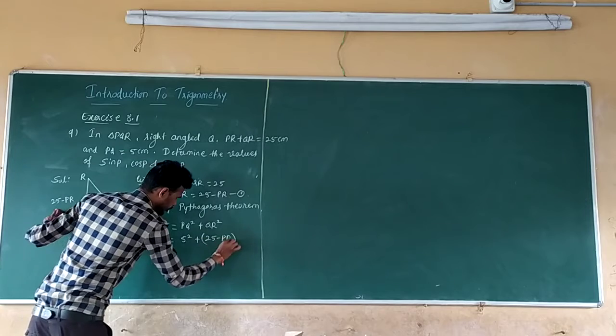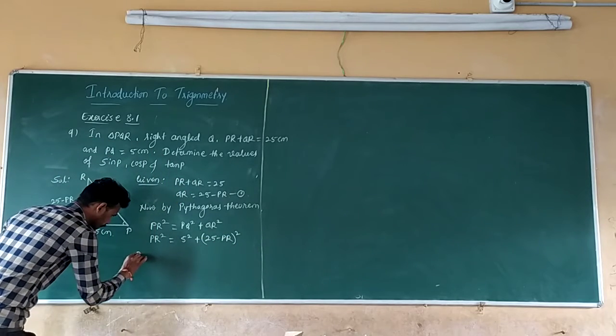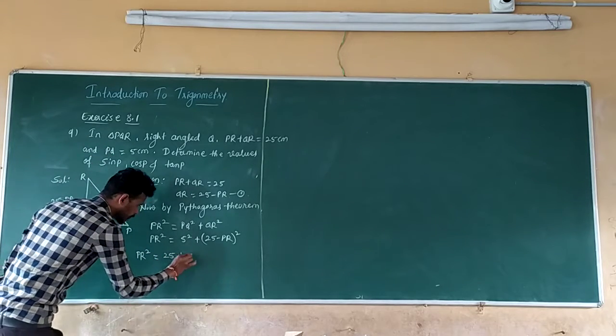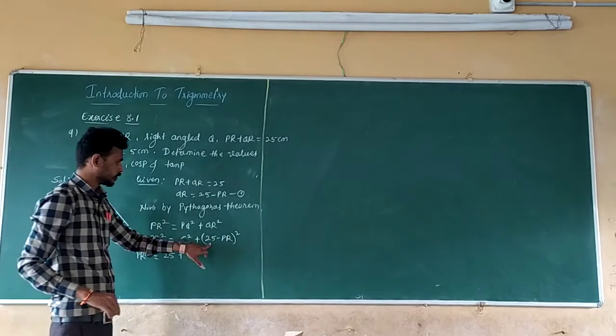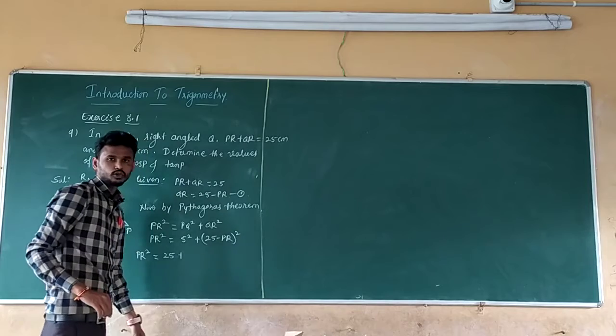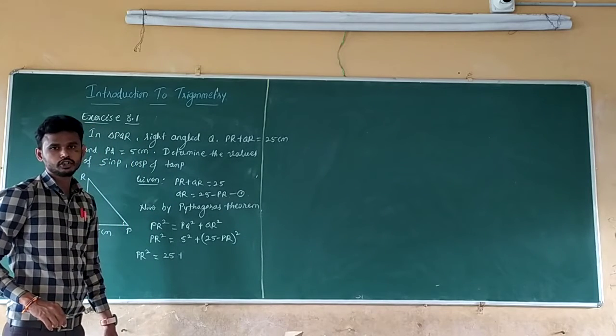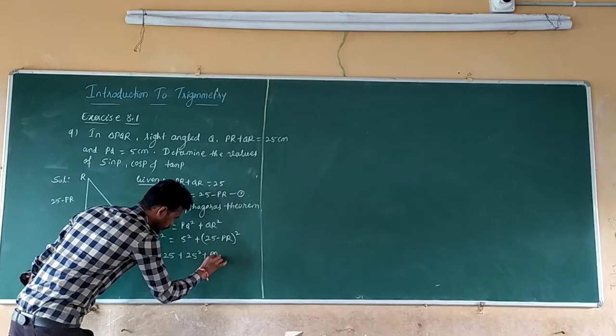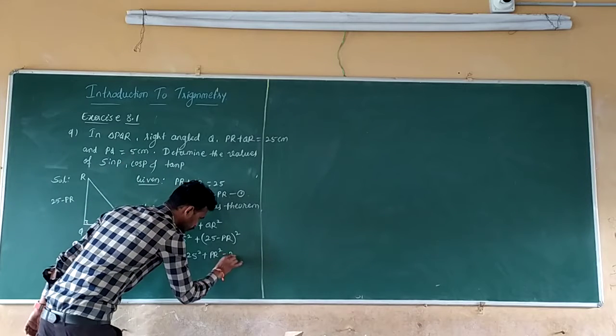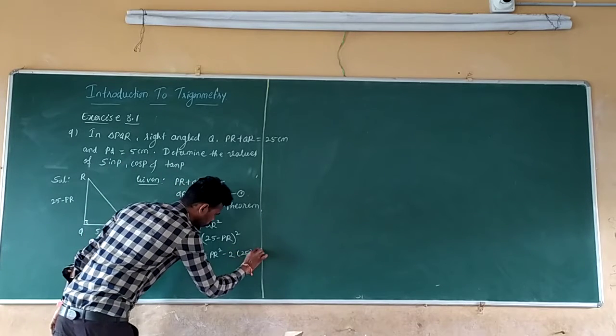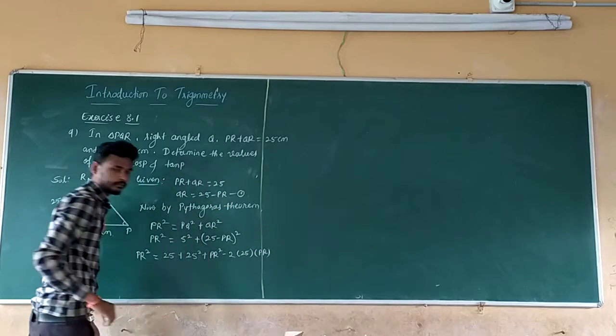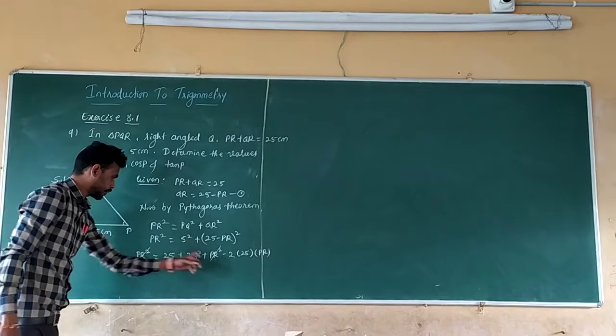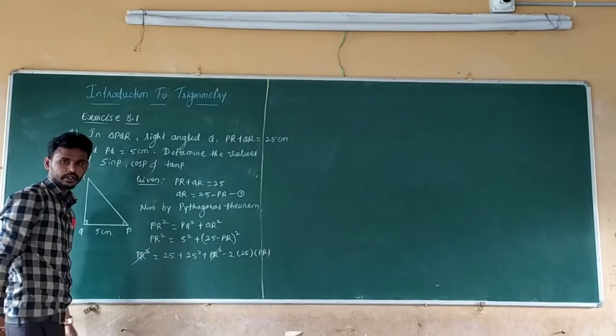So 25 minus PR bracket square. So PR squared which is equal to: this is of the form A minus B whole square, that is A squared plus B squared minus 2AB. So A squared means 25 squared plus B squared means PR squared minus 2AB means minus 2 into 25 into PR. So here PR squared, PR squared gets canceled.